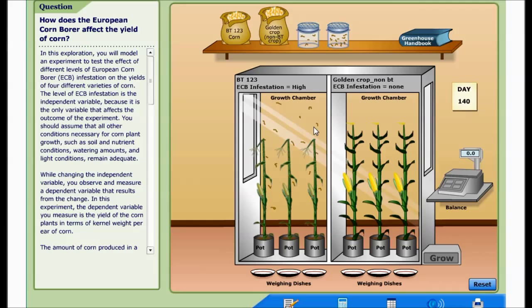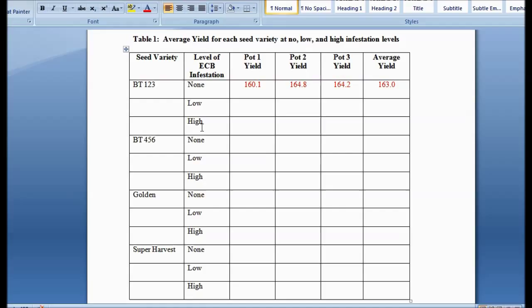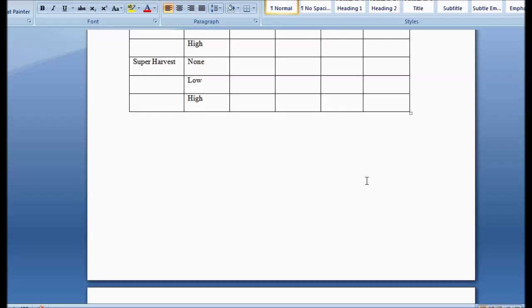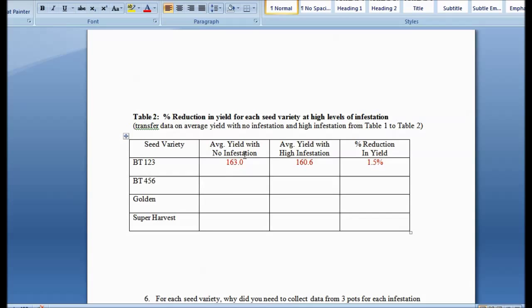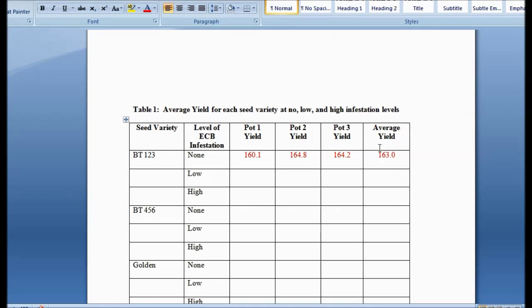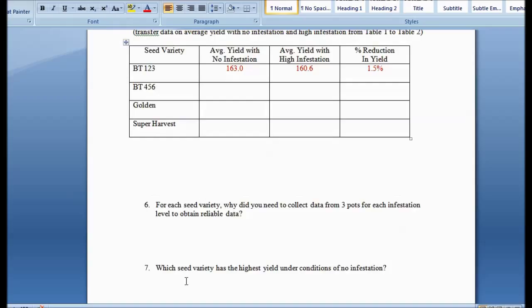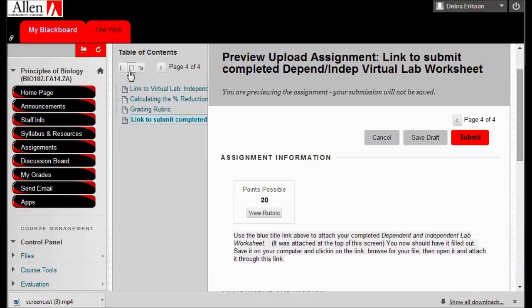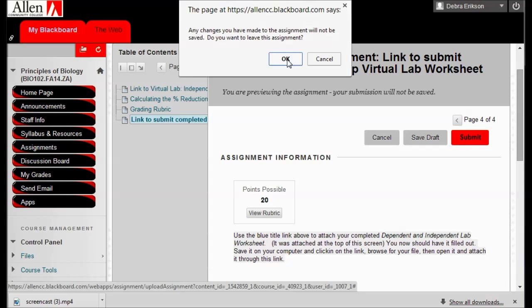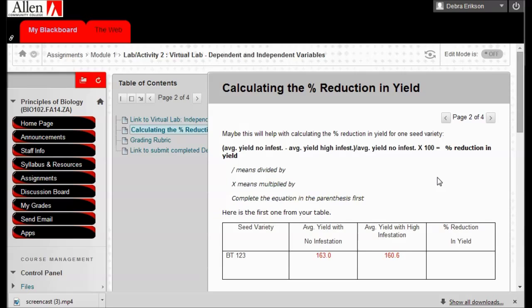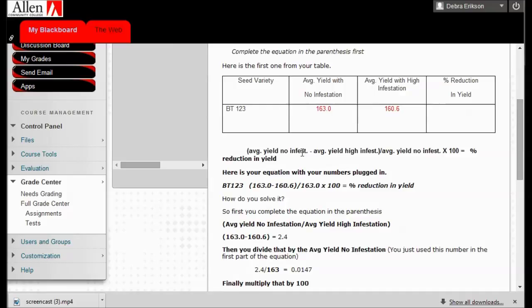Alright. So now let's say you spent your time and you've got all of these filled out. Now you're going to take this average yield and plug it into this next one right here. So I put 163.0 was my average yield for no infestation, because if we go back and look at our instructions, remember I have it over here. So go back to our class and look at the calculating the percent reduction yield. So I have that done. And so when we look at our equation, if it's average yield no infestation minus average yield high infestation, we got those two numbers. We put them in.